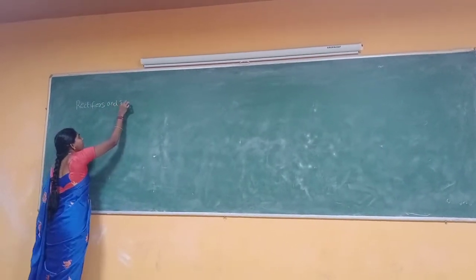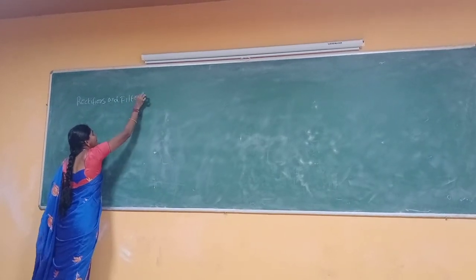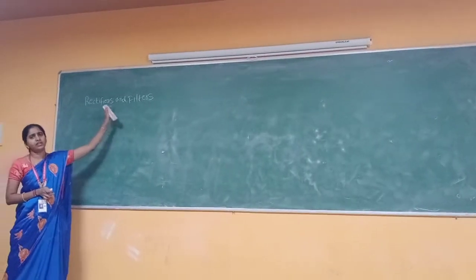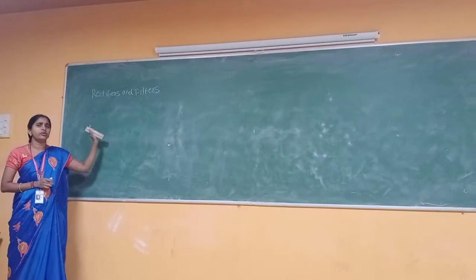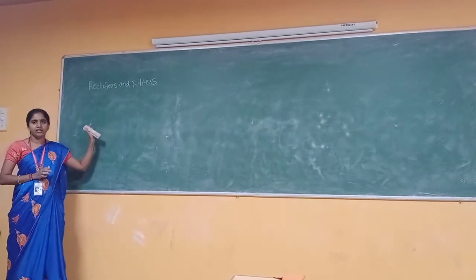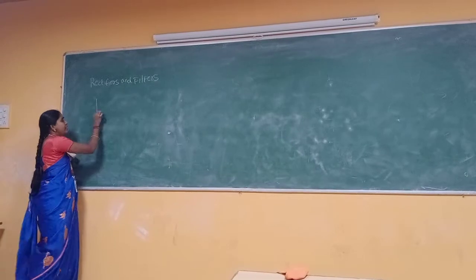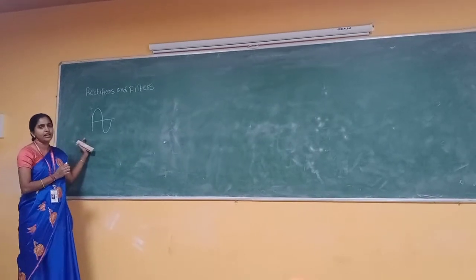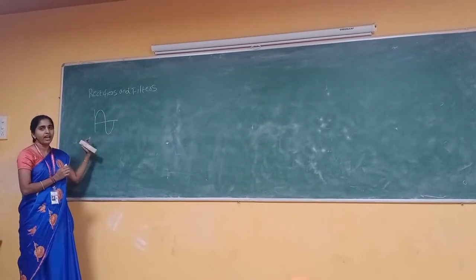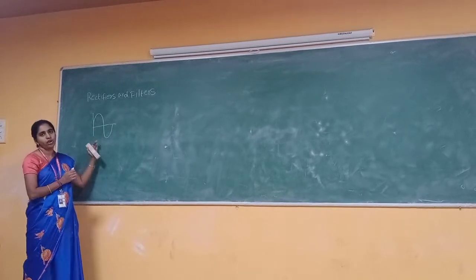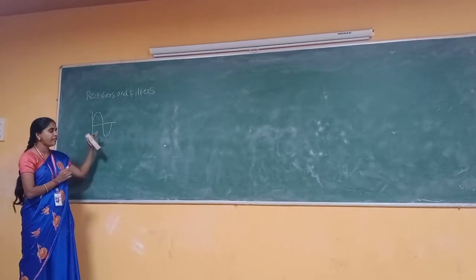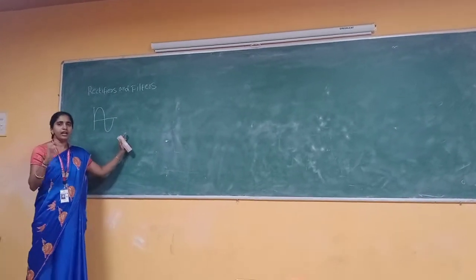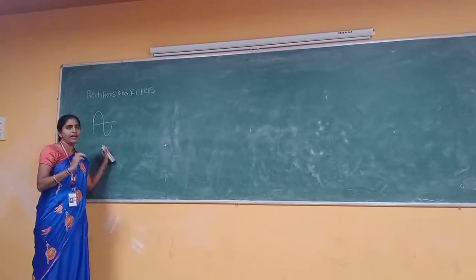Rectifiers and filters. Before we discuss about rectifiers and filters, we have to know about the two different types of currents present. First one is the AC current. Whenever you want to draw this AC current, we are indicating AC current like this — it is adding values in the positive side and then in the negative side. So that is alternating current.